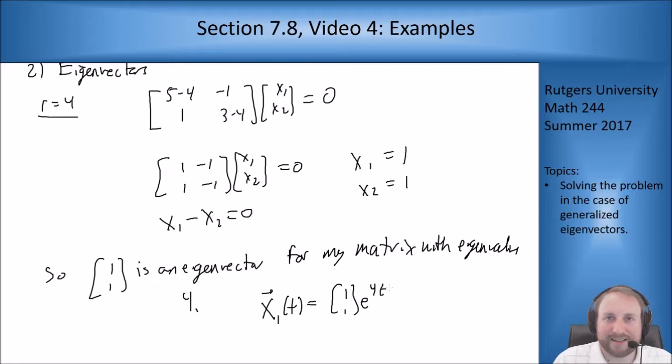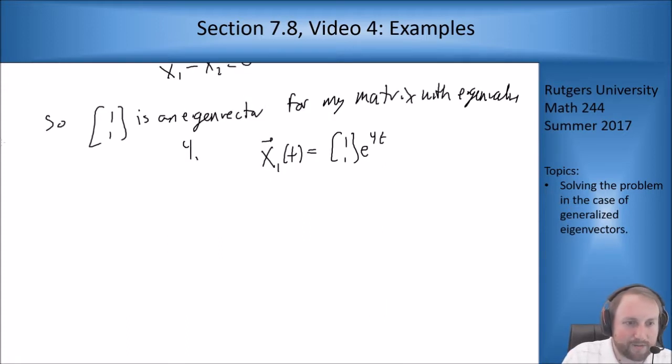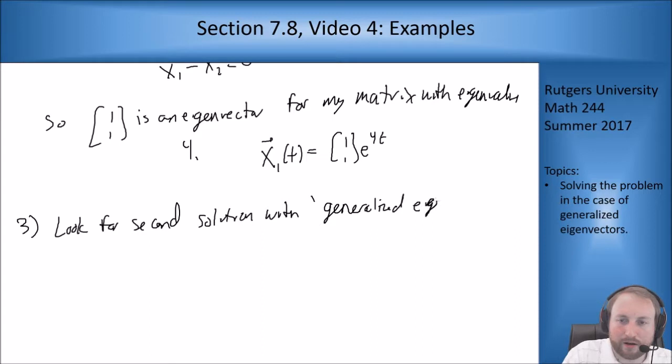Now we have to look for our second solution in terms of a generalized eigenvector, this process we talked about in the second video for this section. Step 3: look for second solution with generalized eigenvector. I'll guess x₂(t) = ξte^(4t) + ηe^(4t) and see what happens.